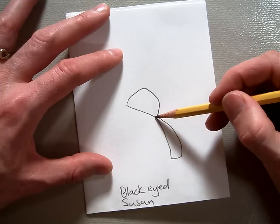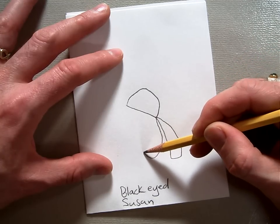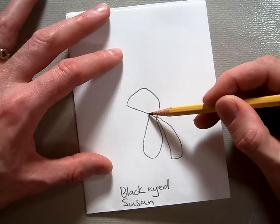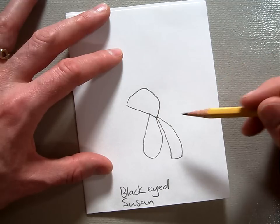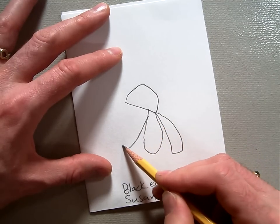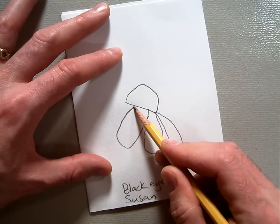And then the next one is going to be more of a teardrop shape, and we're going to be able to see a wider distance of it there, whereas this one was more pointy. And then this one we're going to overlap like that.